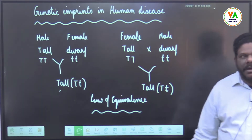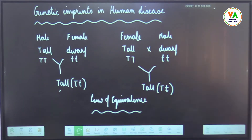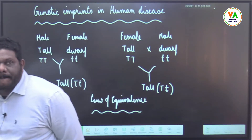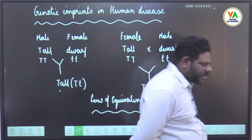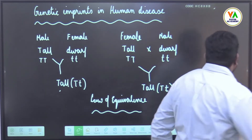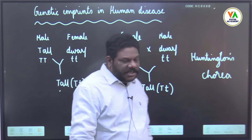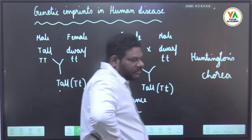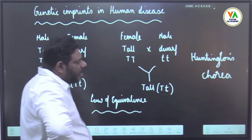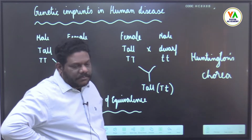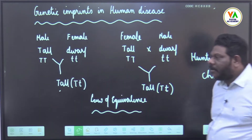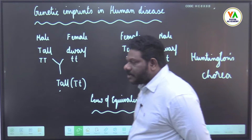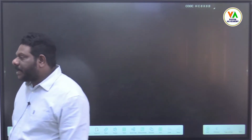Genetic imprints violate the Law of Equivalence as expression depends on whether the gene is of paternal or maternal origin. For example, consider the autosomal dominant disease Huntington's disease (Huntington's Chorea). If the gene is inherited from the father, it behaves in a particular manner, and if from maternal origin, it behaves slightly differently. Even though the symptoms remain the same, the time of initiation and severity vary depending on paternal or maternal origin.